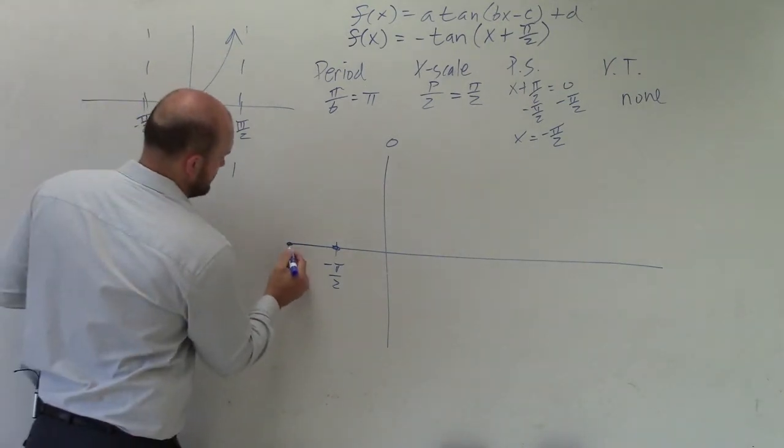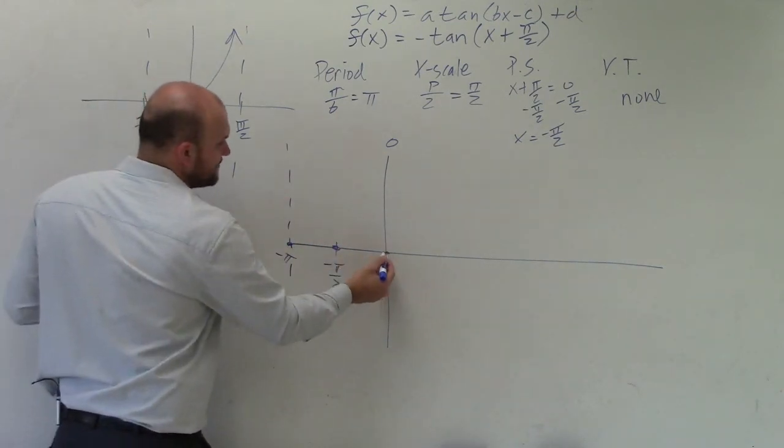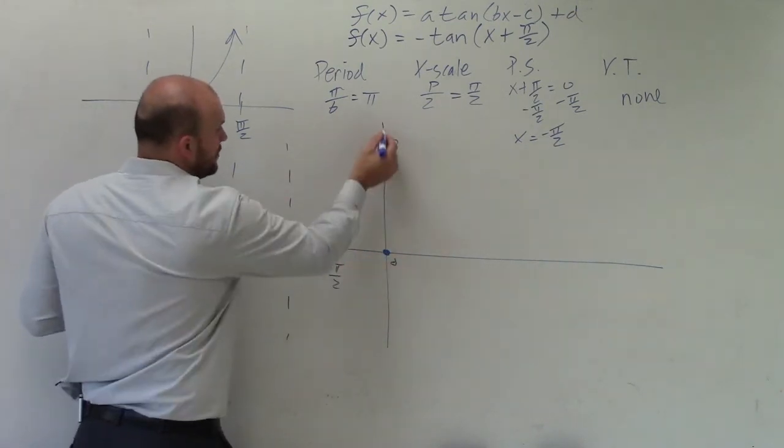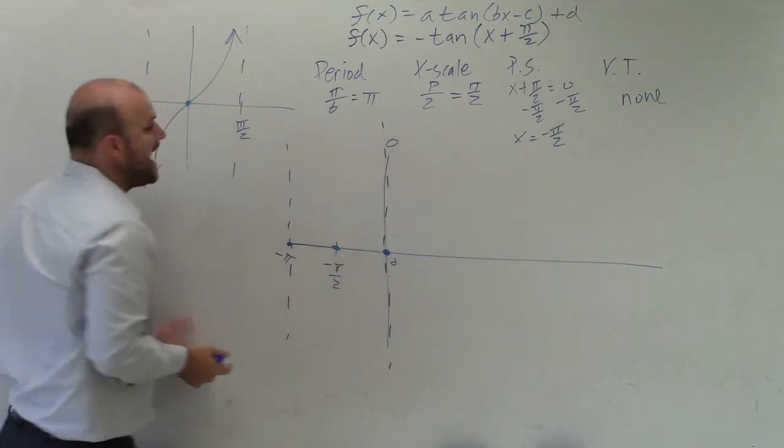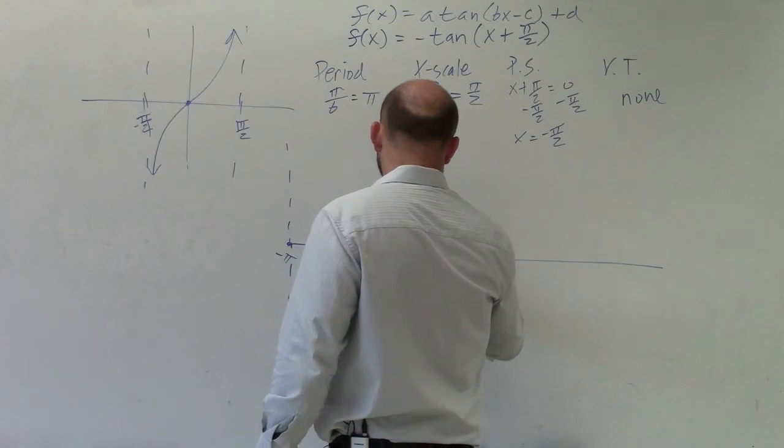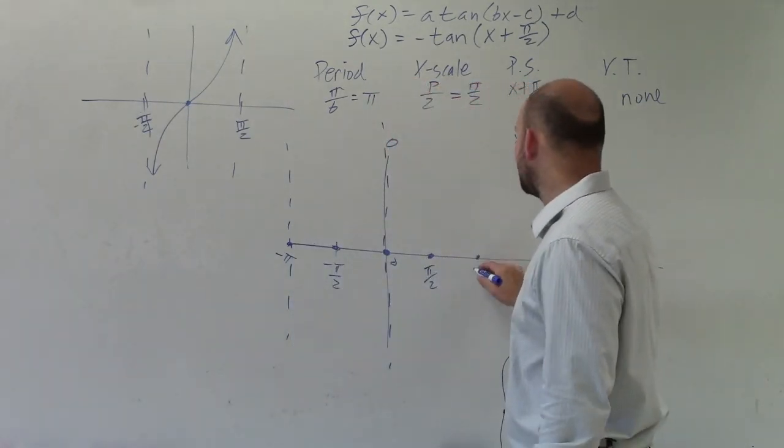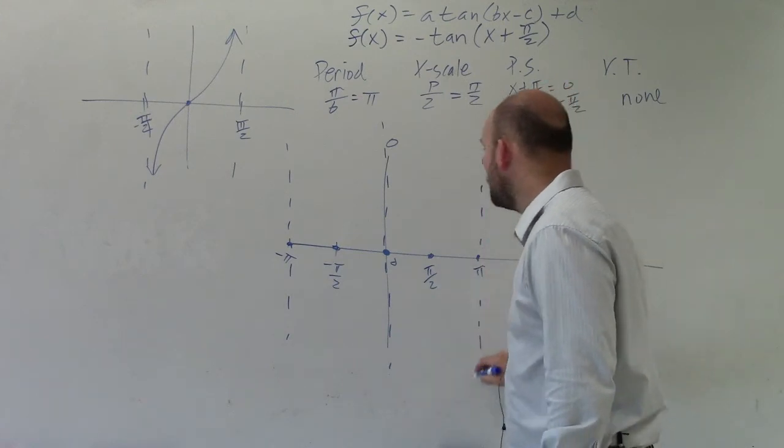which would be negative pi. Then I need to go to the right to find the next asymptote, which would be at 0. So now 0 is going to be an asymptote for my equation. Then I need to go pi halves again, which would now be a positive pi halves to get to the next intercept, and then pi halves again to get to the next asymptote.